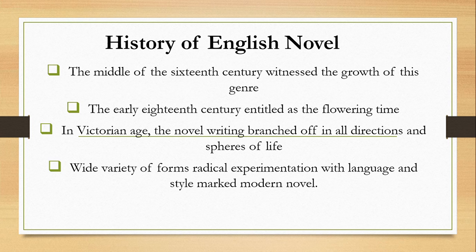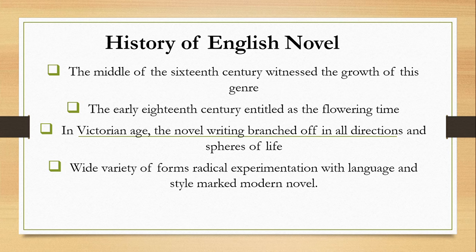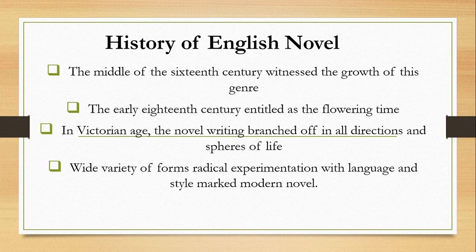The Victorian era also witnessed an expansion of the novel. The novel branched off in all directions and spheres of life — themes changed as well. One could find domestic novels, historical novels, political novels, mystery and crime novels, sociological novels, romantic novels, religious novels, psychological novels, and many more. Novel writing in the Victorian era was used as a vehicle of social criticism and as an instrument of instruction and enlightenment.